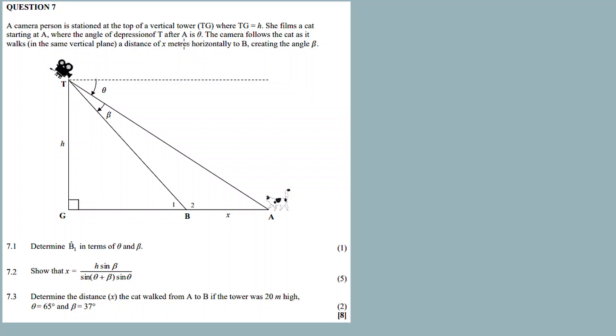Now Lana is a camera person stationed at the top of a vertical tower TG, where TG is equal to h. She films a cat starting at A. They're picking a scene from point A where the angle of depression from T to A is theta.